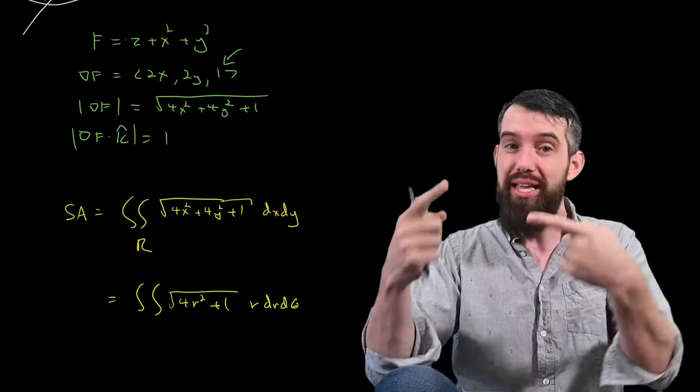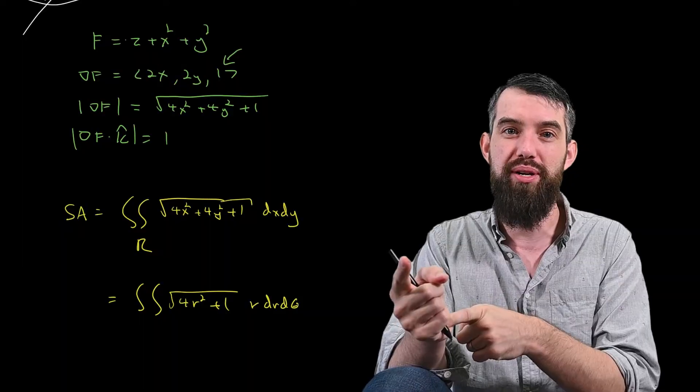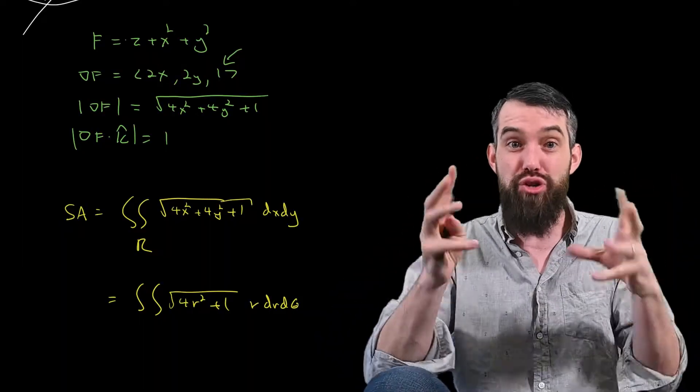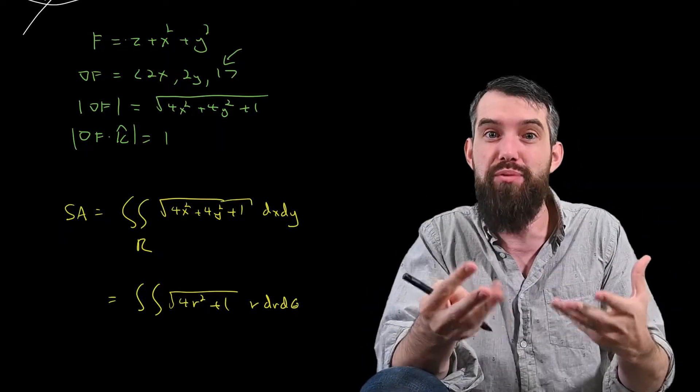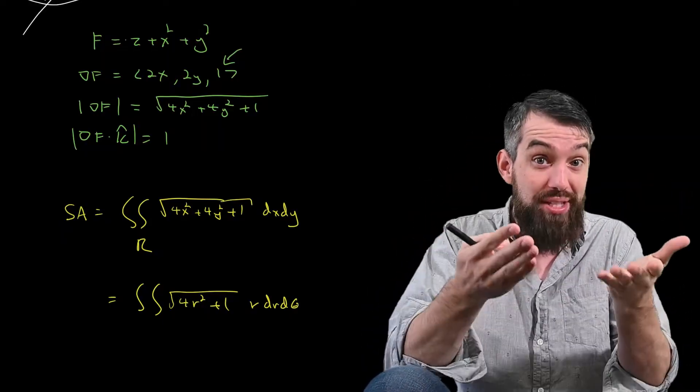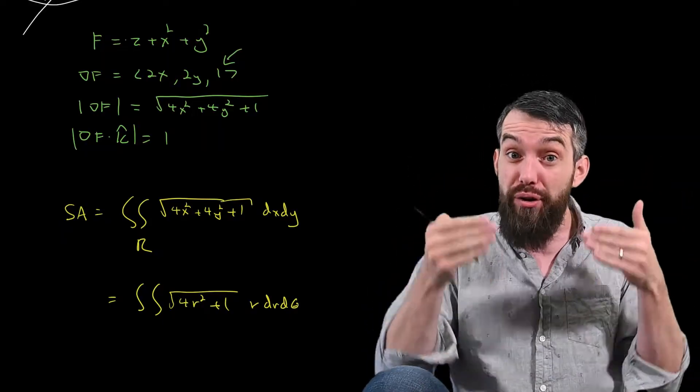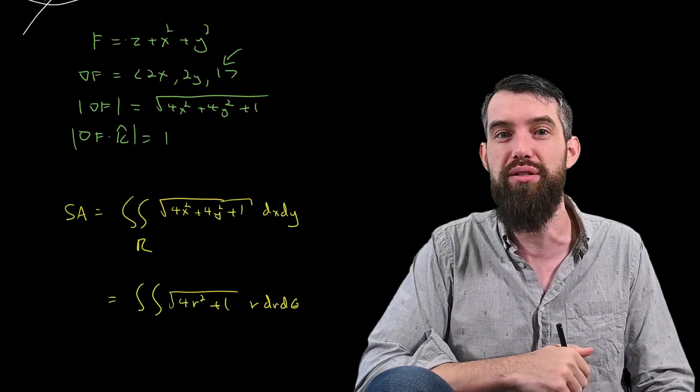It's not like in some of our previous examples where we were talking about a parameterization in terms of r and theta, and thus the first double integral we wrote down was an integral dr d theta, and there wasn't that r out the front. Because I am converting to polar, I do need to have that r dr d theta there.